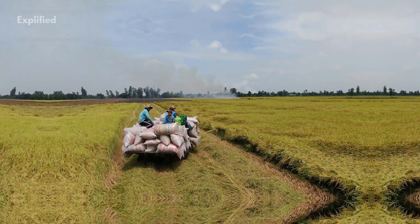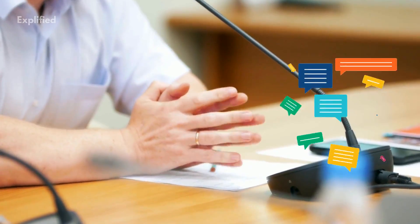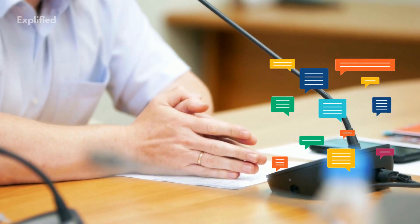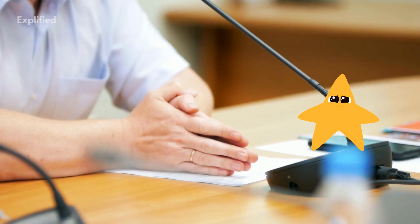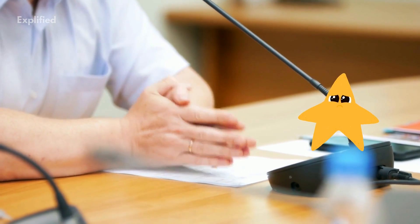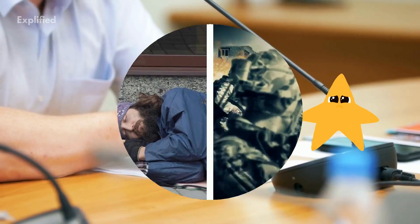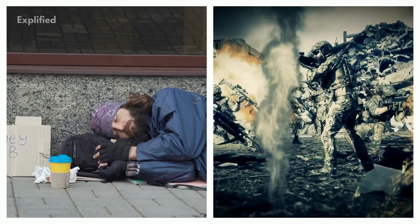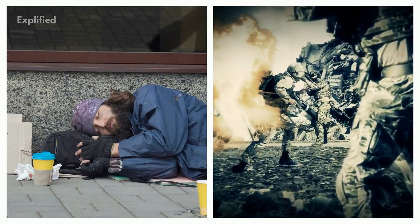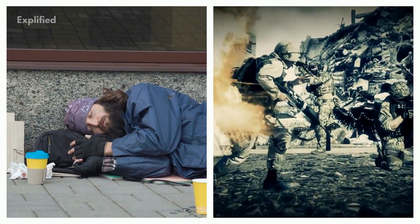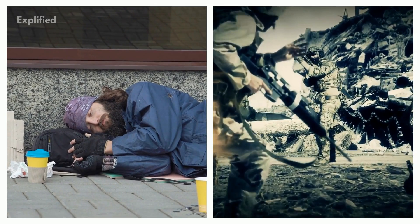According to some critics, Malthusian theory is only pessimistic. Thus, it gives a gloomy picture and threatens the people with misery, poverty, epidemics, wars, drought and floods.